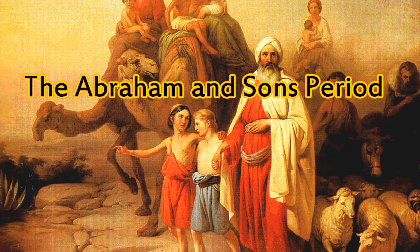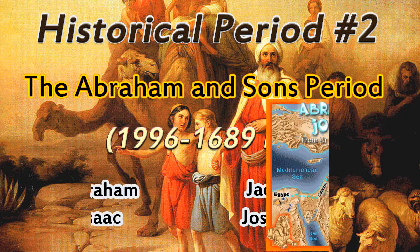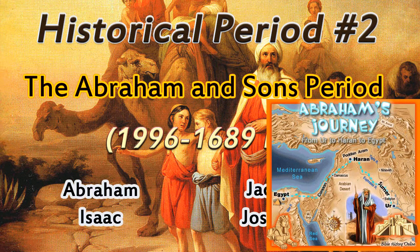Historical period number two, the Abraham and Sons period, 1996 to 1689 BC. The main people surrounding Abraham and the Hebrews, Genesis chapters 12 through 50, were number one, Abraham, who was the first Hebrew. God called him from a distant land in the Middle East called Ur of the Chaldees, and promised him that if he would obey God, his descendants would be multiplied as the sand on the seashore and as the stars in the sky, and one of his descendants would be the Savior of all mankind.